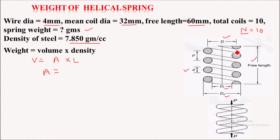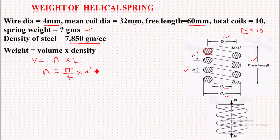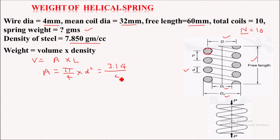If we take the cross-section of a spring, it will appear circular. So we have to take this cross-sectional area, which is nothing but the area of a circle — that is pi by 4 times d squared, where d is the wire diameter. We will put in the values: pi is 3.14, divided by 4, into wire diameter squared.